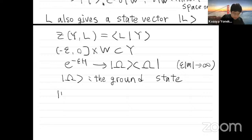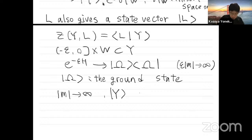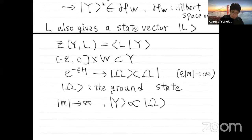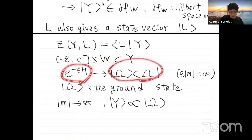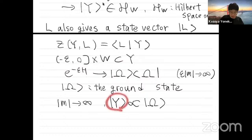In the limit that the Euclidean time — mass parameter — goes to infinity, all excited states decay under this time evolution and only the ground state survives. Then in this infinite mass limit, this state |Y⟩ is proportional to the ground state, because we have this region which is represented by this time evolution, and then we get this projection.